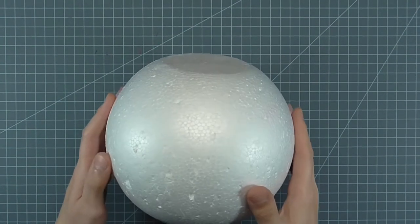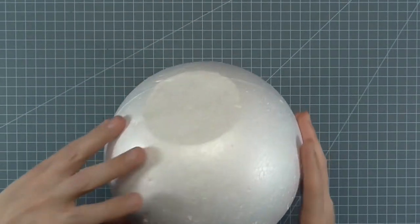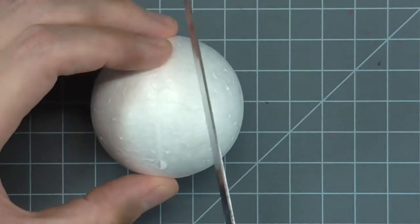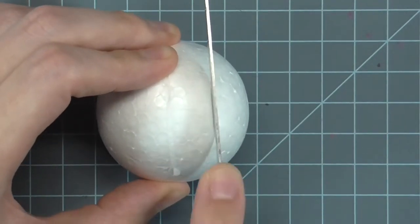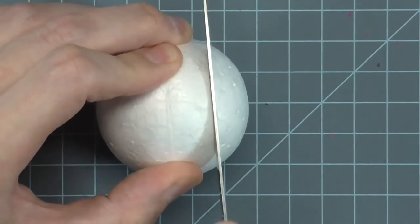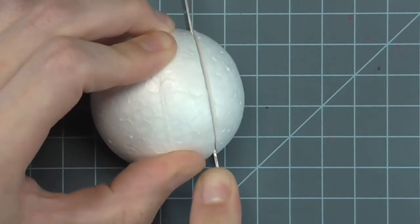To make the block easier to work with, cut off a small section on the bottom. This gives you a flat surface that sits on the table. Demonstrating on a smaller styrofoam ball, when you cut, keep the knife as perpendicular to the table as possible. Make short cuts and go slow. Keep your fingers clear of the blade.